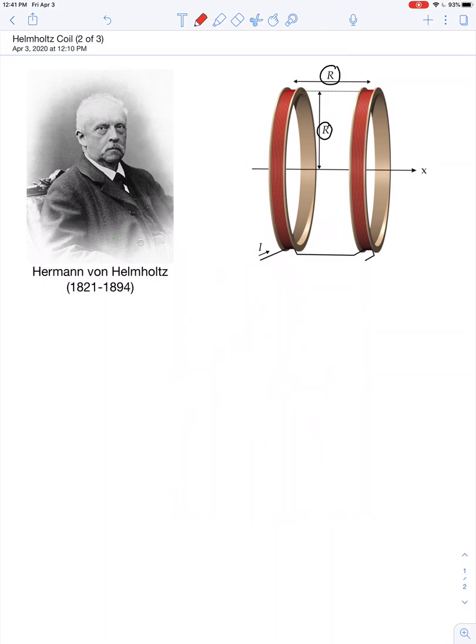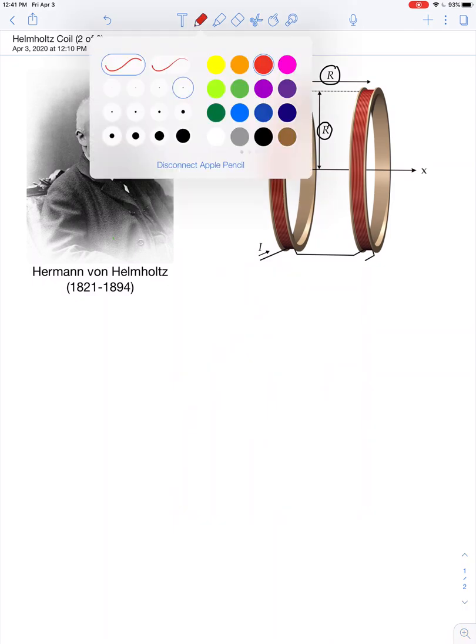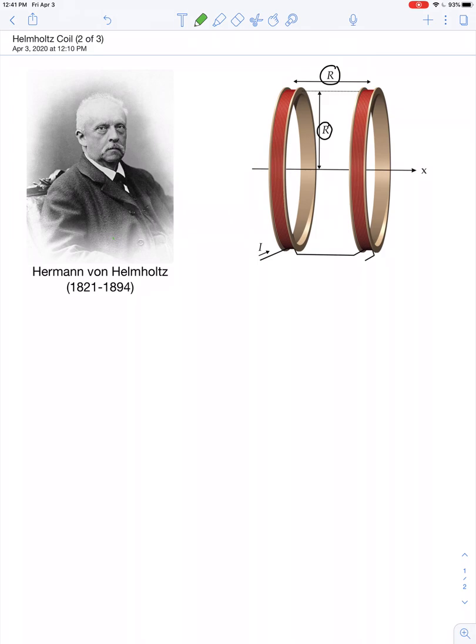When it comes to the Helmholtz coil, the two fields kind of reinforce one another. And you end up with a magnetic field line that's very nearly uniform in between the two. Maybe curves a little bit near the ends, but not much.